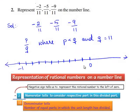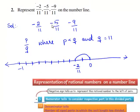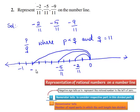Each division from 0 to minus 1 corresponds to minus 1 by 11. Therefore, minus 2 by 11 is the second division from 0 towards the left on the number line — this is the position of minus 2 by 11. And minus 5 by 11 is the fifth division from 0 towards the left side of the number line — this is the position of minus 5 by 11. And minus 9 by 11 is the ninth division from 0 towards the left of the number line — this is the position of minus 9 by 11.